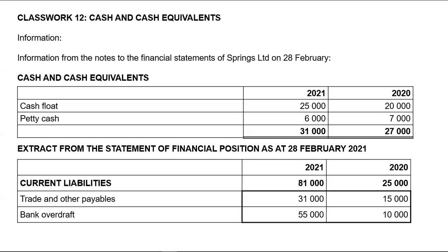However, you will notice that in cash and cash equivalents we do not have bank. Just because you don't have bank under cash and cash equivalents, you cannot automatically assume that we don't have a bank account. You need to go and check either in your trading and other payables, look for bank overdraft, or go straight to the face of your statement of financial position.